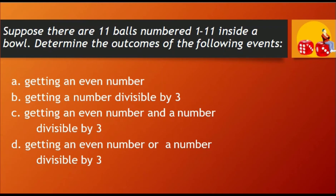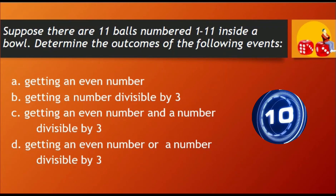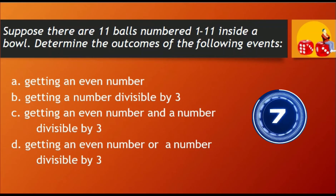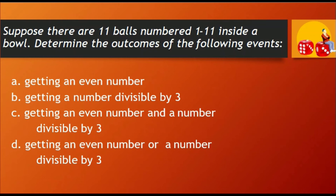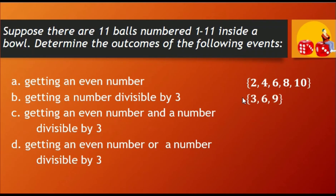I'm giving you 10 seconds to think about it. Okay, let's now determine the outcomes for each event. For event A, the outcomes are 2, 4, 6, 8, and 10 because these are the even numbers from 1 to 11. For event B, the outcomes are 3, 6, and 9 because these numbers can be divided exactly by 3.